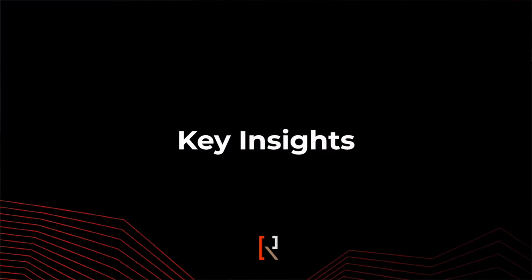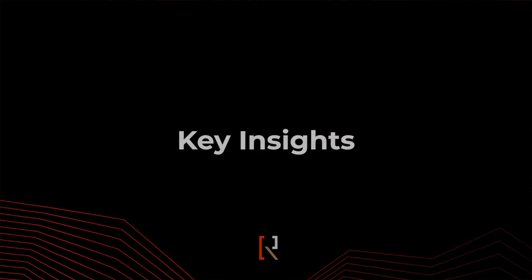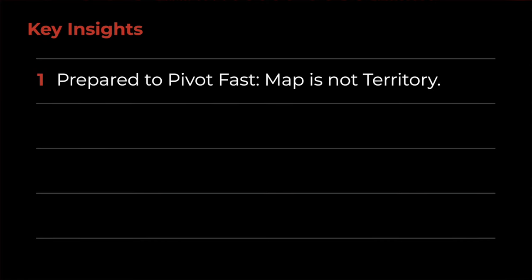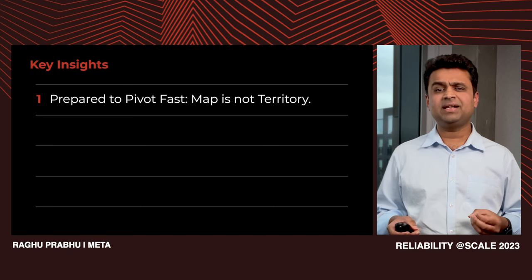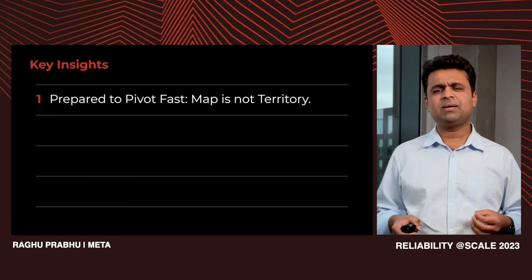Having discussed the evolution of disaster recovery — spanning power storms, overload readiness, and unified site degradation — let's summarize the key insights. First, adaptability: when it comes to disaster readiness, be prepared to pivot fast when a new risk arises. Adaptability is key. 'Map is not territory' is a good mental model here — no static map can completely chart the risk of territory since this space is constantly evolving.